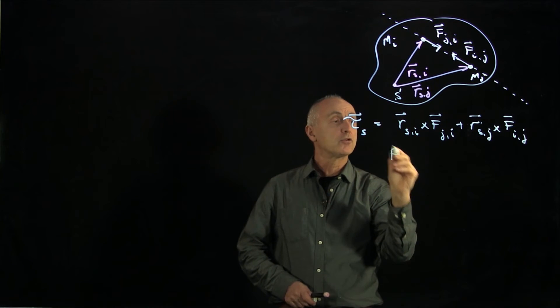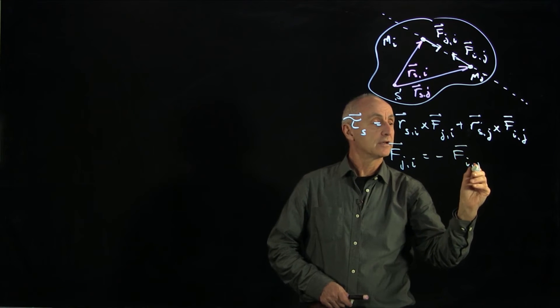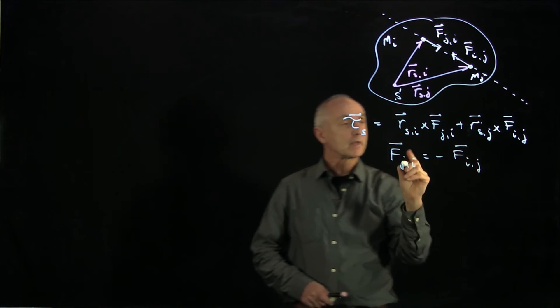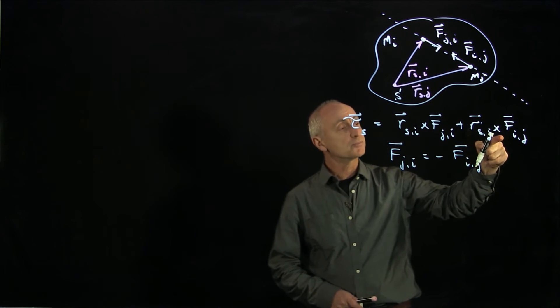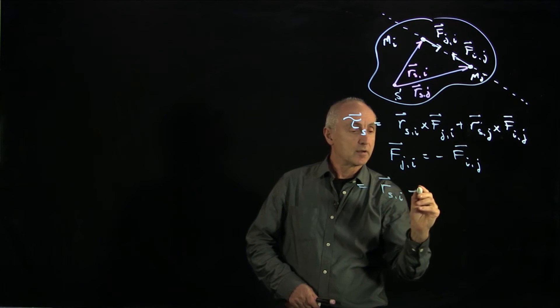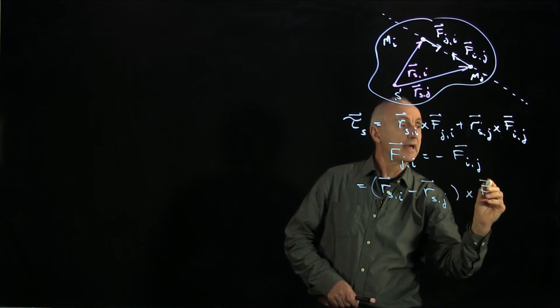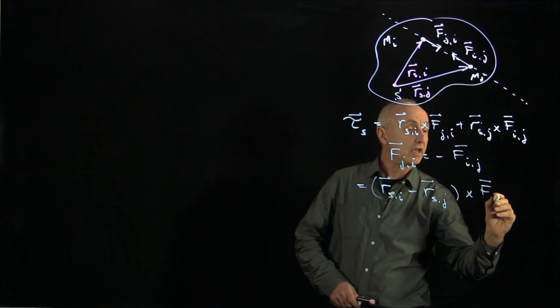The third law pair says FJI is equal to minus FIJ. And so if we substitute, let's put the minus sign over here, we get RSI minus RSJ cross FJI.